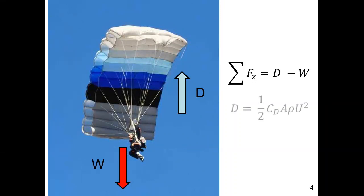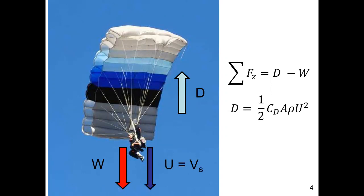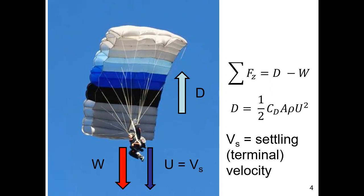When the drag force and weight are equal, the momentum or inertial form of the drag equation describes the settling velocity. Capital U, or commonly V sub S, is the settling or terminal velocity.